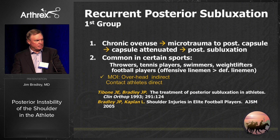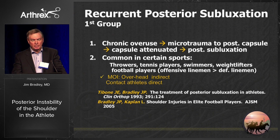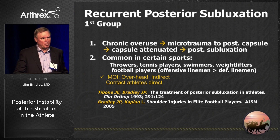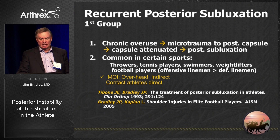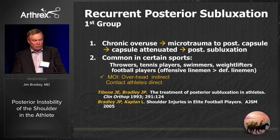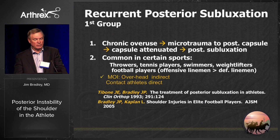Back in 1993, Jimmy Taboney and I presented our article on athletes. We thought there was chronic overuse — microtrauma to the posterior capsule, capsular attenuation, and posterior subluxation — in a group of throwers, tennis players, and swimmers. Then Lee Kaplan and I did a study on elite football players at the NFL Combine, and found an overwhelmingly increased incidence in offensive linemen compared to defensive linemen; they were the two highest groups. The take-home message: the mechanism of injury in overhand athletes is indirect, and in contact athletes it's usually direct.